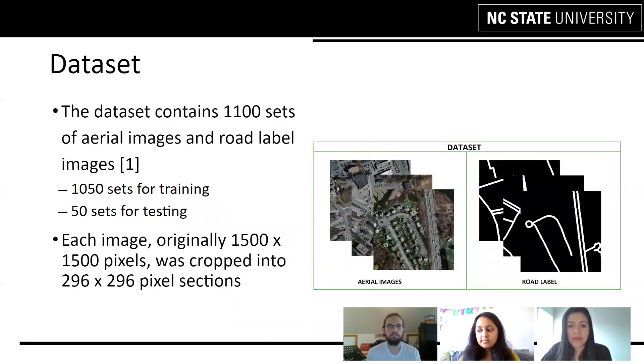We have used a dataset that contains 1,100 sets of aerial images and road-labeled images. We have split it into 1,050 sets for training and 50 sets for testing. Each image was originally 1,500 by 1,500 pixels, and we have cropped it into sections of 296 by 296 pixel sections.